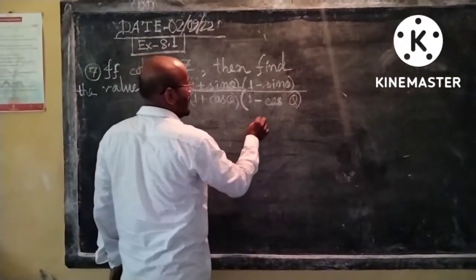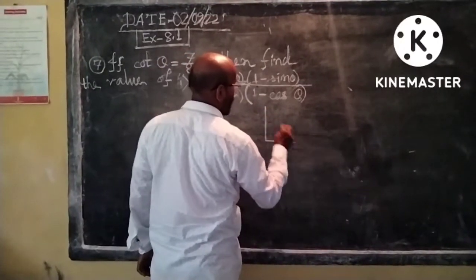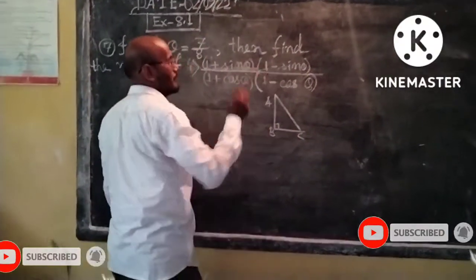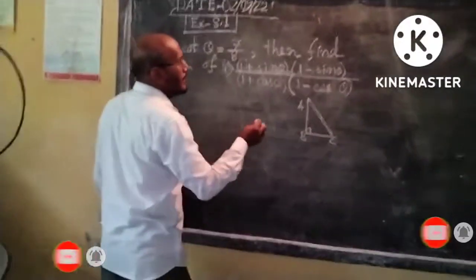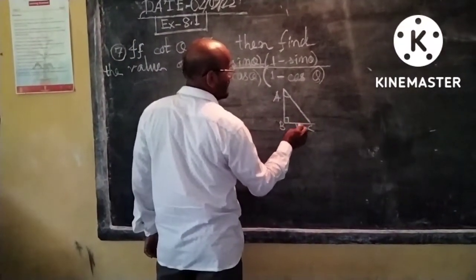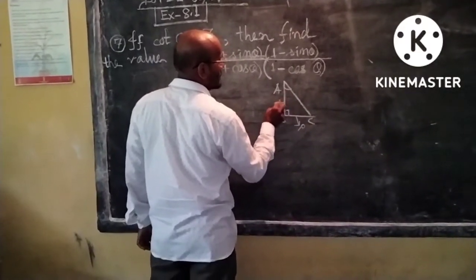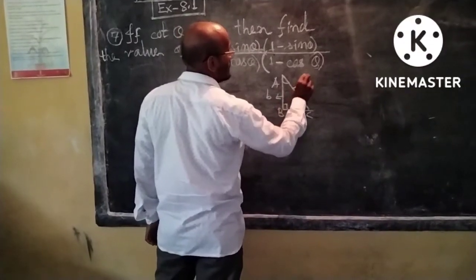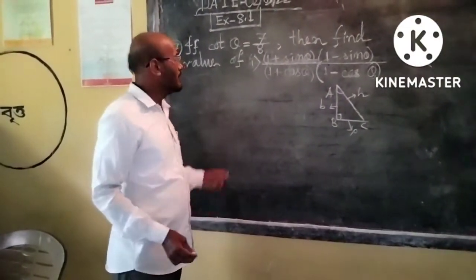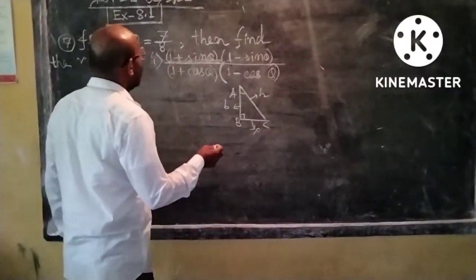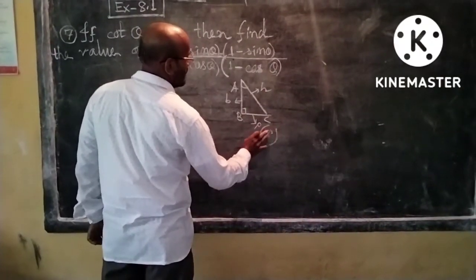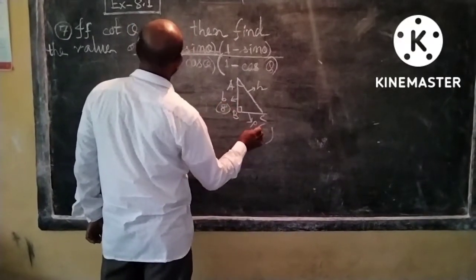Now we draw a right angle triangle ABC. Here B is the right angle. The angle is 13. Then for angle A, we have the perpendicular BC and base AB. The hypotenuse AC. From cos theta equals 7 by 8, we can write AB equals 7 and BC equals 8.